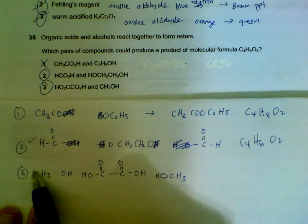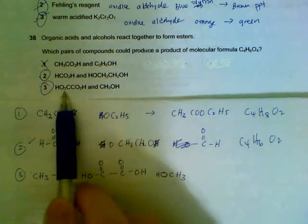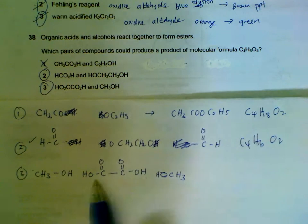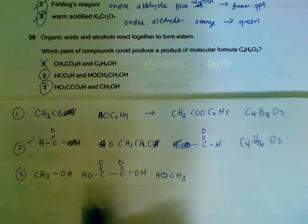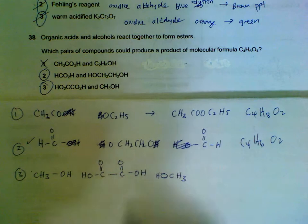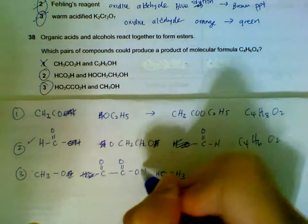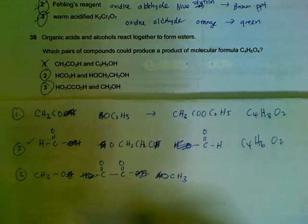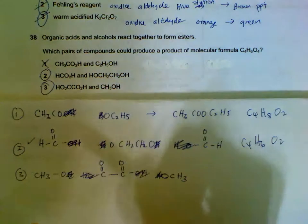The combinations must be statement 3 must be correct. Still, we have to check. Again, we have this diacid. I put it in the middle. 2 alcohols put it aside. Because each acid group can react with 1 alcohol group. So we do our elimination again. And you can check that it's also C₄H₆O₂. So statements 2 and 3 are correct.